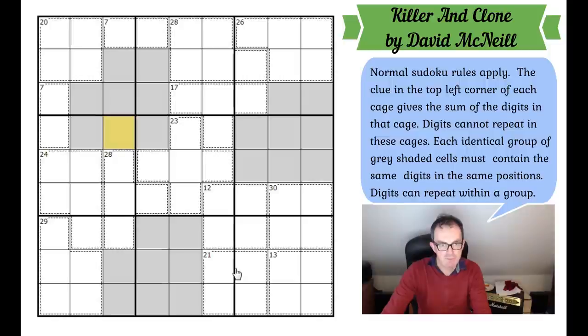So let's look at the rest of the grid and see what we can spot. Are there any cages here that have restricted properties? Well, there's this one, the 30 cage. That must be six, seven, eight, and nine. That's the only way of getting to 30 in four cells. 12 is, there are two ways of making 12 in four cells. It must contain a one and a two though. Let's label that up in case that matters. 28. Similarly, there's two ways of making 28. And it must contain an eight and a nine.